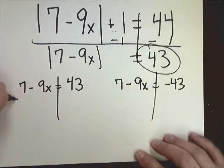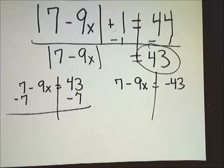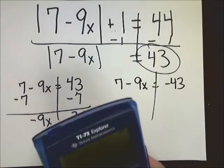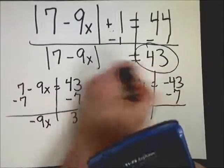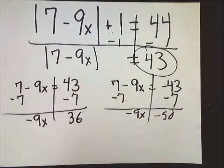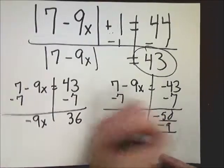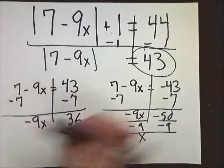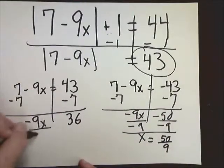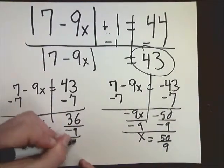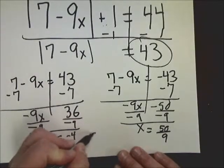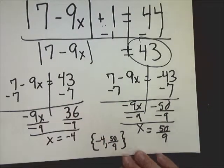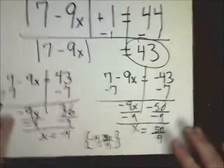Draw your line here and here. Subtract 7 from both sides. 36. Bring down your negative 9x. Negative 43 minus 7 is negative 50. And you're going to have to divide by negative 9 on both sides. And this gives you 50 over 9. And this one gives you negative 4. So that's my answer set. I would just put my little braces there. And I'll get negative 4 and 50 over 9.